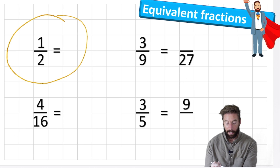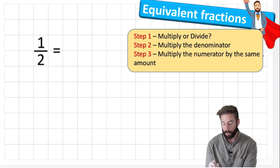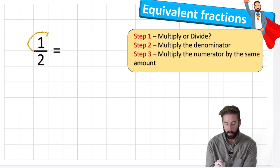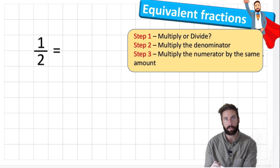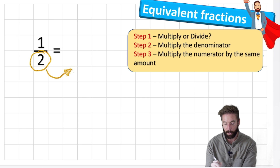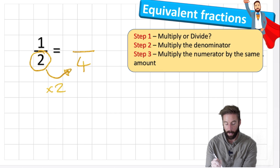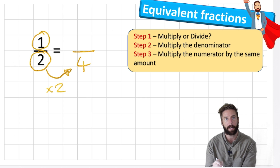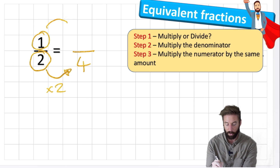Let's begin and follow our steps. Step one says multiply or divide. We can't divide because one cannot be divided, so we're going to multiply. Step two: multiply the denominator. I'm going to pick my denominator and multiply it by two - two times two equals four. Step three: multiply the numerator by the same amount. Whatever I've done to the denominator I do to the numerator. I times the denominator by two, so I times the numerator by two to keep it the same value.